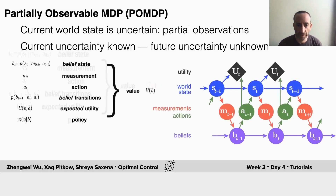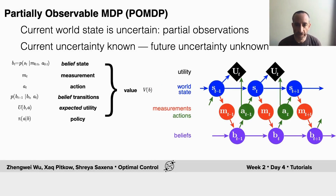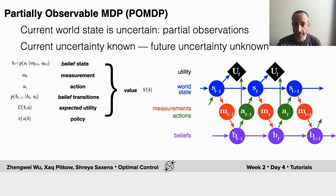We can characterize the model of the variables that are relevant here by that bigger diagram, which includes the world state evolving over time, shown in blue, the measurements that are emitted by the world state that then update the beliefs — which are updated dynamically from past beliefs — and ultimately drive your actions. The world state determines the actual observations and the utilities that you get, and the actions tell you the actual costs.